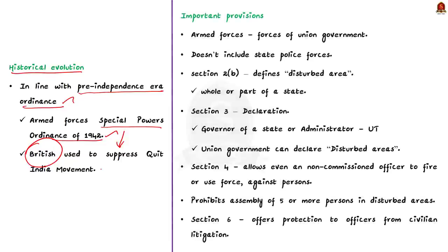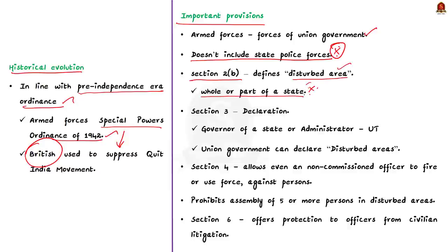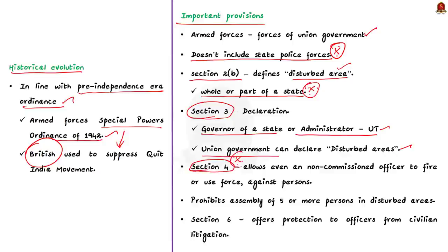Now moving on to the important provisions of the act. According to the act, Armed Forces means the forces of the Union Government — it does not include state police forces. Section 2B provides for an area to be declared as a disturbed area; the whole or part of a state can be declared as such. Section 3 says that the Governor of a state, or Administrator in the case of a Union Territory, or the Union Government can declare an area as a disturbed area. Section 4 deals with special powers conferred to the armed forces, allowing use of force even by a non-commissioned officer against persons who act against the law.